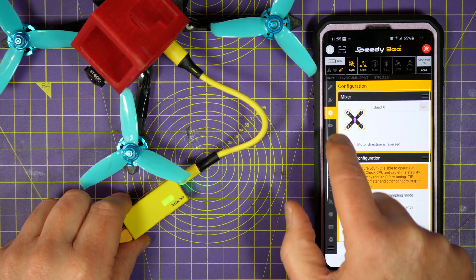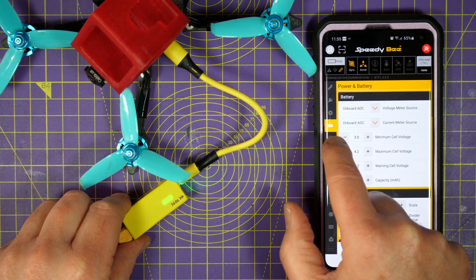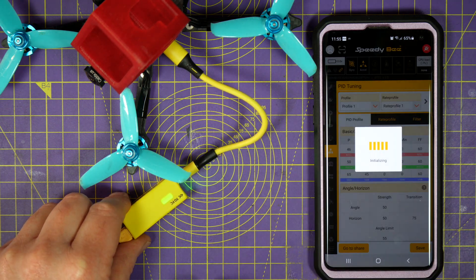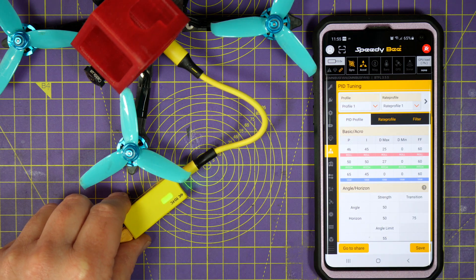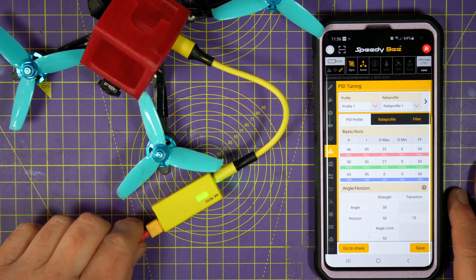And, let's have a look down here, we've got everything we need as normal. So, that's configuration, power and battery, failsafe, all your PIDs and so on. So, that's it really.